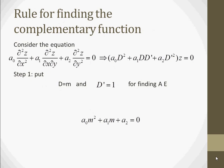Now, the rules for finding the complementary function. We consider a second-degree homogeneous linear partial differential equation and convert ∂/∂x as D and ∂/∂y as D'. Step 1: We put D equal to m and D' equal to 1 in the equation, which gives us the auxiliary equation in terms of m.